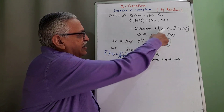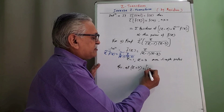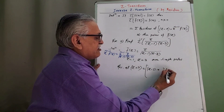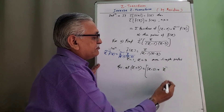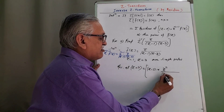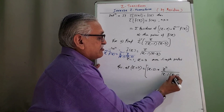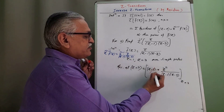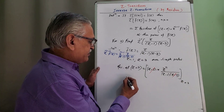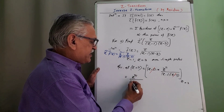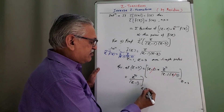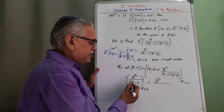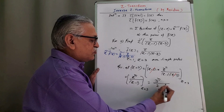Residue at the second pole Z = 3: applying the formula, (Z − 3) multiplied by Z^N/((Z − 1)(Z − 3)) evaluated at Z = 3. The (Z − 3) terms cancel, giving Z^N/(Z − 1) at Z = 3, which equals 3^N/(3 − 1) = 3^N/2.